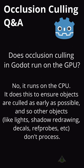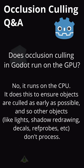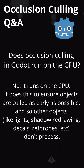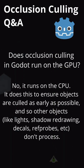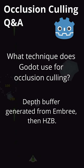Does occlusion culling in Godot run on the GPU? No, it runs on the CPU. It does this to ensure objects are culled as early as possible, and so other objects like lights, shadow redrawing, and decals don't process. What technique does Godot use for occlusion culling?